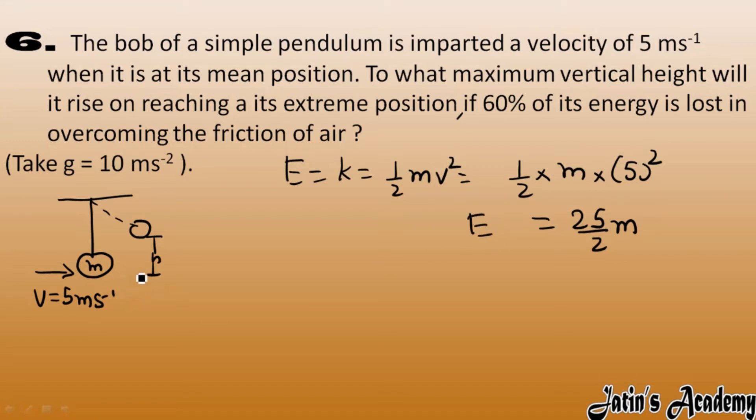Okay, so this is the initial energy stored or initial energy is there in the pendulum or energy given to the pendulum. Now this pendulum is going to some height, raises to height, but condition is that 60% energy is lost. 60% energy is lost, total we have 100% energy, so out of that only left part we have 40%.